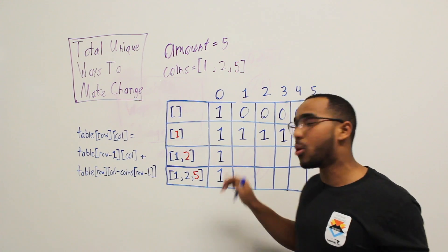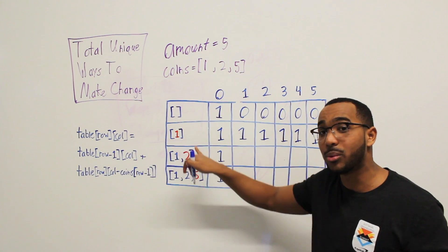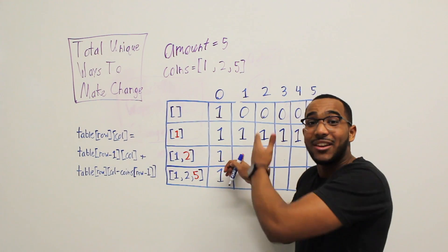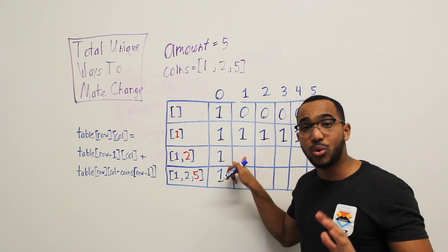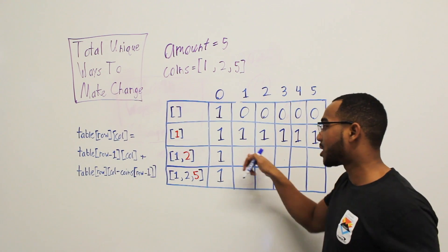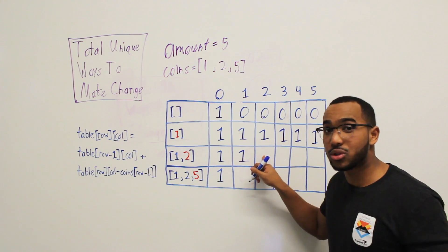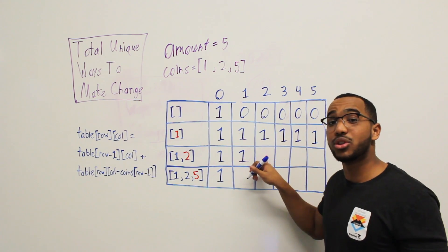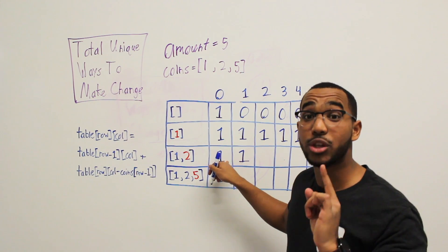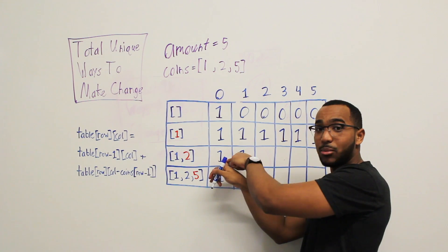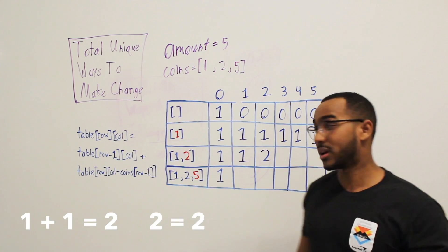Now I'm considering the two coin. This is a big jump — this is why this problem is very similar to the zero-one knapsack problem. Can I even use the two coin when I have an amount one? I can't — I'd go negative. So all I can do is not use the two coin; it becomes one. When we're at two, we can use the two coin. If we don't use it, we get one unique way. If we do use it, two minus two is zero and we stay in the row — so one plus one is two. If I have a one and a two coin, there are two unique ways to make change for two: two ones, and just the two coin.